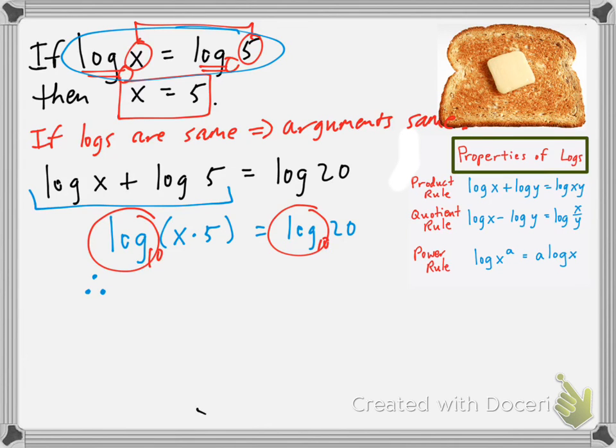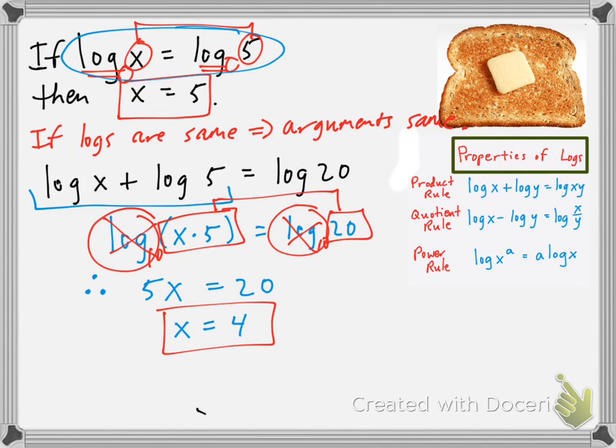Then it's like we can cancel out those logs and say, well, the arguments then have to be the same. So we would say, therefore, let me get my blue, we would say x times 5, or 5x, must equal 20. And therefore, x is actually equal to 4. And that's it. So that's our bread and butter. We'll do some more examples in the following videos.